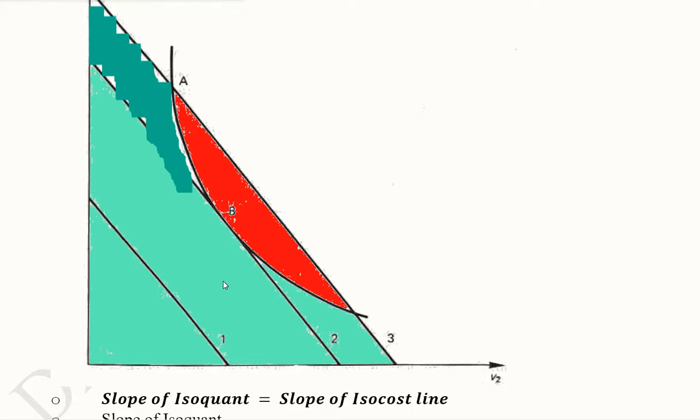We will be using this much of V2 and this much of V1. So this is how diagrammatically we understand it.